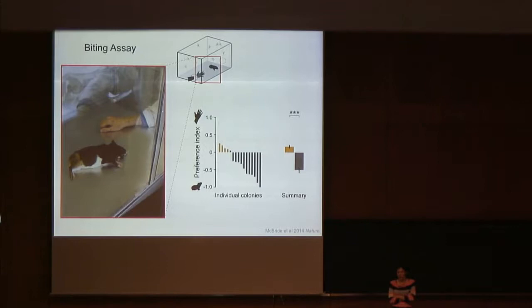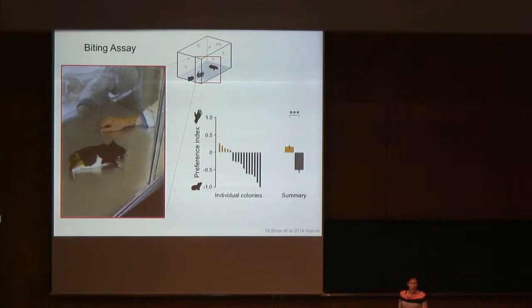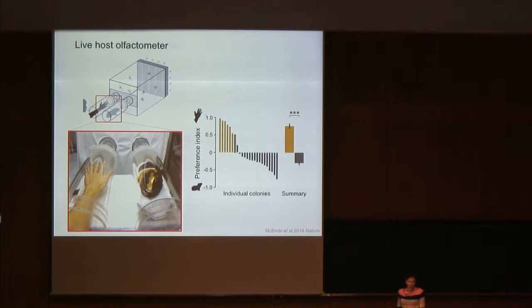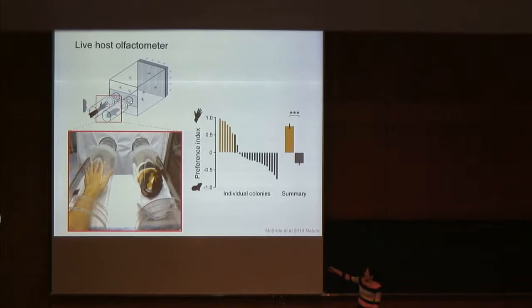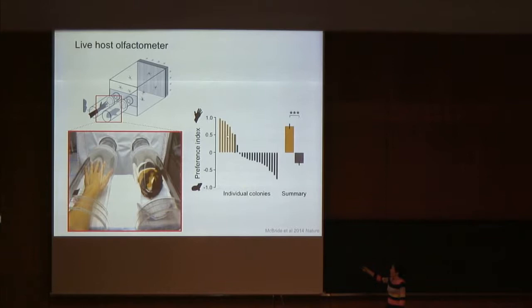One issue with that assay is that mosquitoes are exposed not only to olfactory cues — upon which we think host preference is primarily based — but also to visual cues. In general, mosquitoes are attracted to visual contrast, so the guinea pig would be expected to provide more visual contrast since I'm Caucasian, making it visually more attractive. To isolate the effect of olfactory cues, we used a live host olfactometer assay — a large box with 50 to 100 female mosquitoes, where a fan pulls air over live human and live guinea pig hosts into traps and into the box, allowing mosquitoes to choose to fly upwind towards human odor or guinea pig odor. The preference of domestic or brown mosquitoes for humans in this assay was very strong.